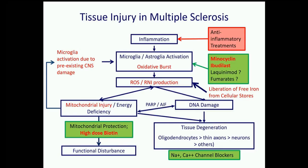A summary scheme emerges: new waves of inflammation targeted by current treatments lead to compartmentalized inflammation, microglial activation, oxidative burst, radical production, mitochondrial injury — which amplifies radical production — and downstream consequences of functional disturbances and tissue injury, further amplified by mitochondrial injury, microglial activation, and liberation of iron from cellular stores.